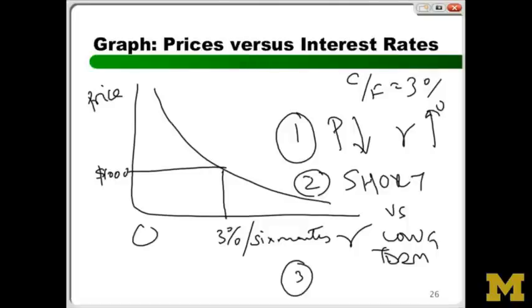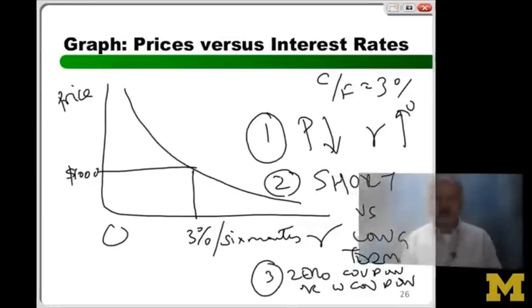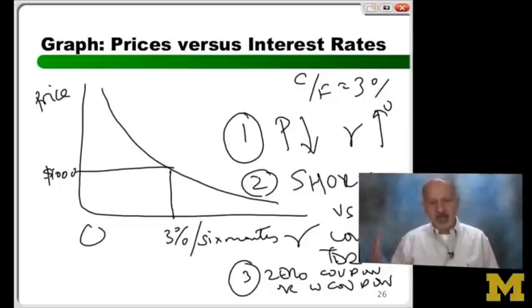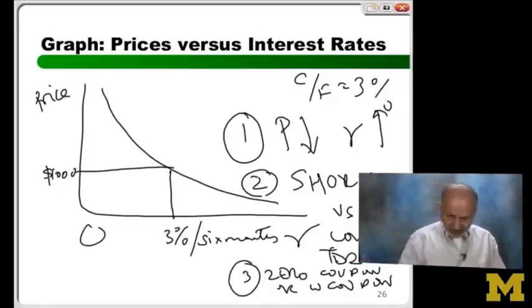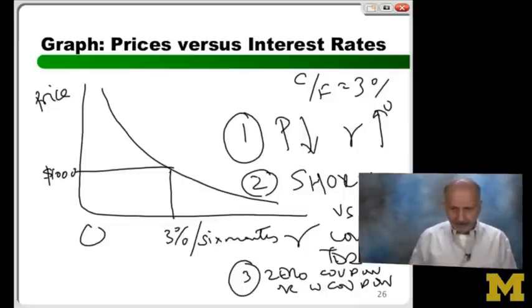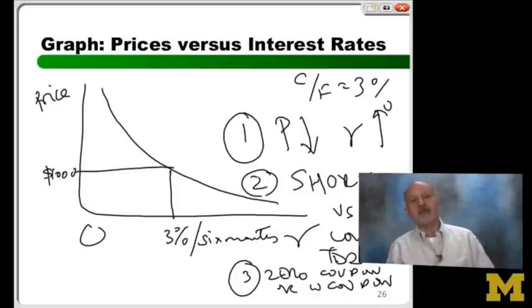Finally, whose price will jump around most — zero coupon or coupon-paying bonds? Keeping their maturities the same: if you have a zero coupon bond with 10-year maturity, all your money is coming 10 years from now. A 10-year coupon-paying bond delivers some money earlier. So the zero coupon bond will be more sensitive to changes in interest rates compared to an otherwise identical coupon-paying bond — the only difference being the coupons.